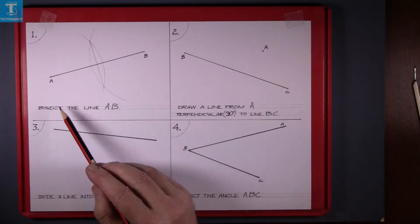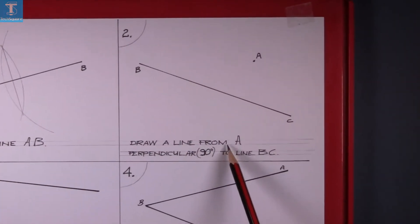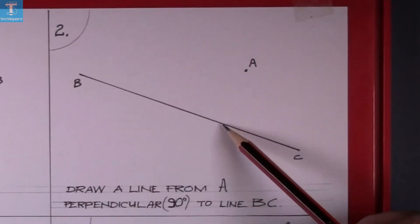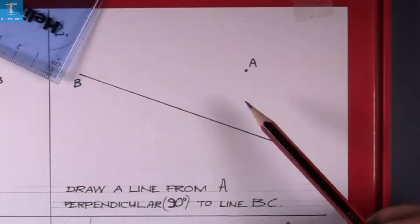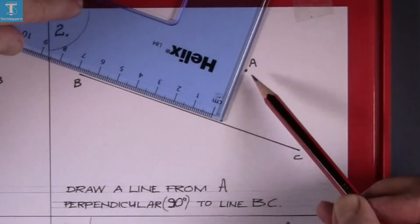Question 2 is similar to question 1. Draw a line from A perpendicular to BC. So perpendicular means at 90 degrees, so it'll be along the set square there.